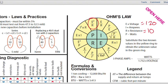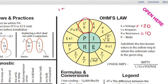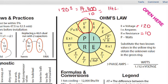So, to start off with, we take 120 volts. We square that, which is 120 times 120. That will give us a product of 14,400. We then divide that by our resistance of 10. We come up with 1,440 watts.